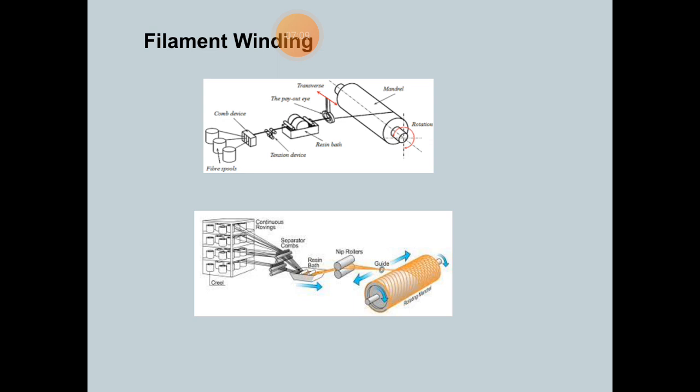Once the winding is completed, the filament wound part is allowed to cure. Post curing, the mandrel is taken out. To facilitate easy removal of the mandrel, a variety of mandrel designs have been developed. Mandrels may be made of segments and collapsible, or made of materials with low melting point. They may also be fabricated from salt-soluble materials or structures which can be broken post curing of the parts.